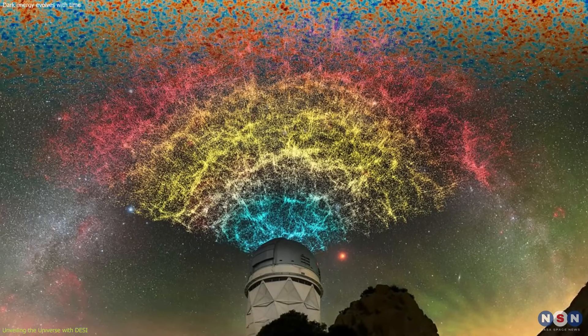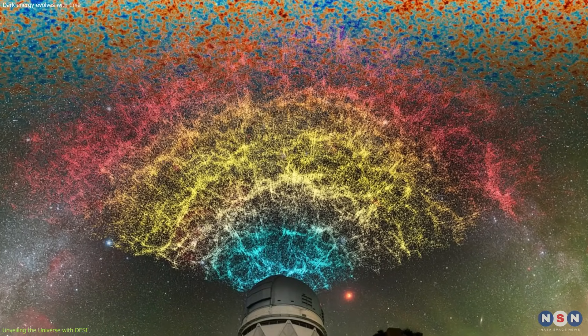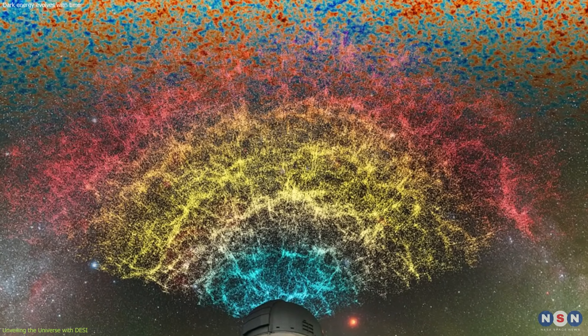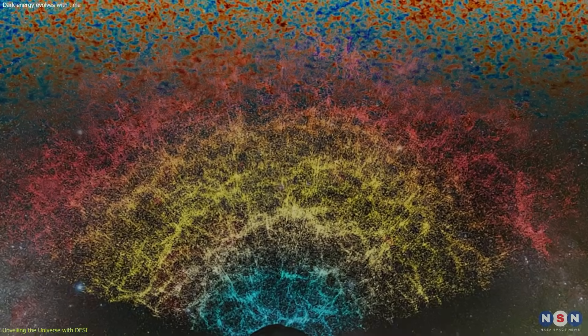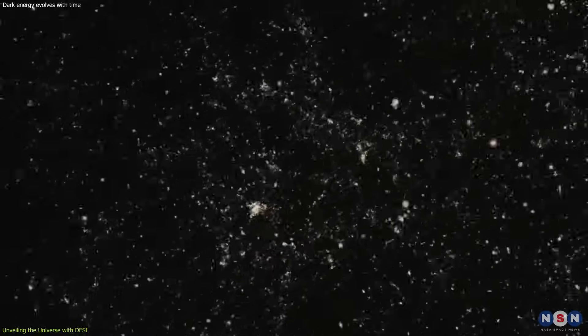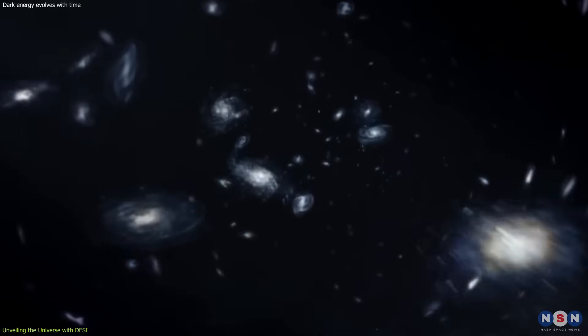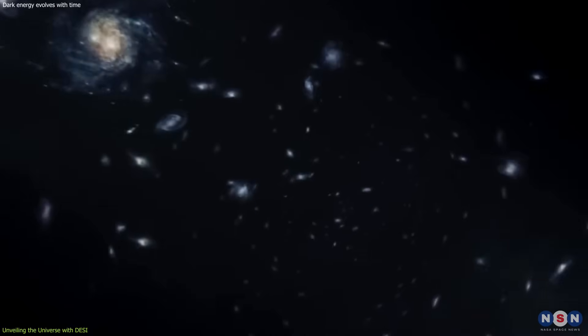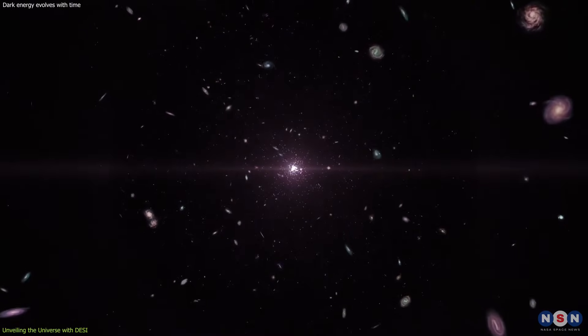What sets this instrument apart is its ability to create the largest ever 3D map of the universe. Each month, it pinpoints the positions of a million galaxies, providing astronomers with a detailed blueprint of the cosmos. This map is not just a collection of points. It's a time machine that allows us to look back over the past 11 billion years and observe how the universe has expanded.